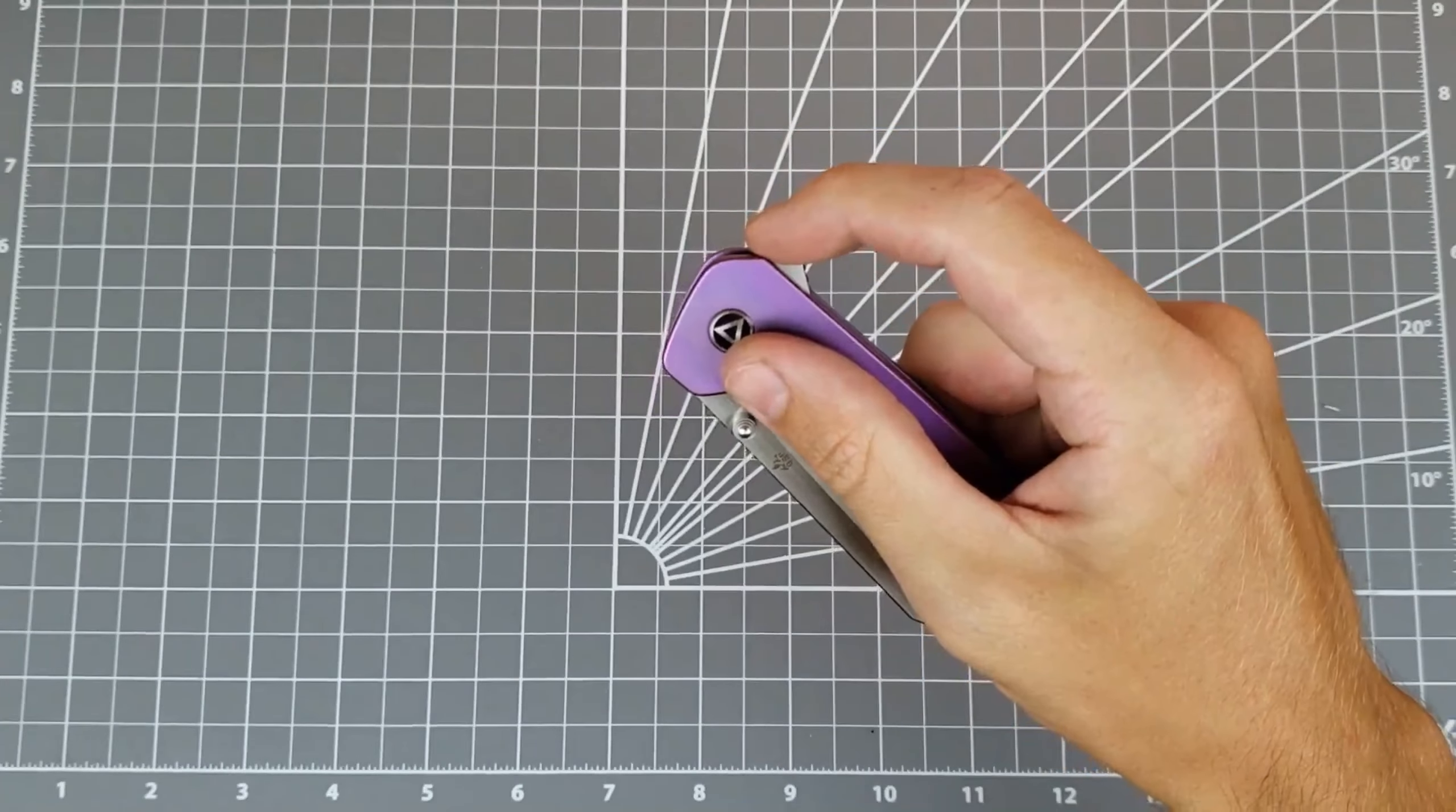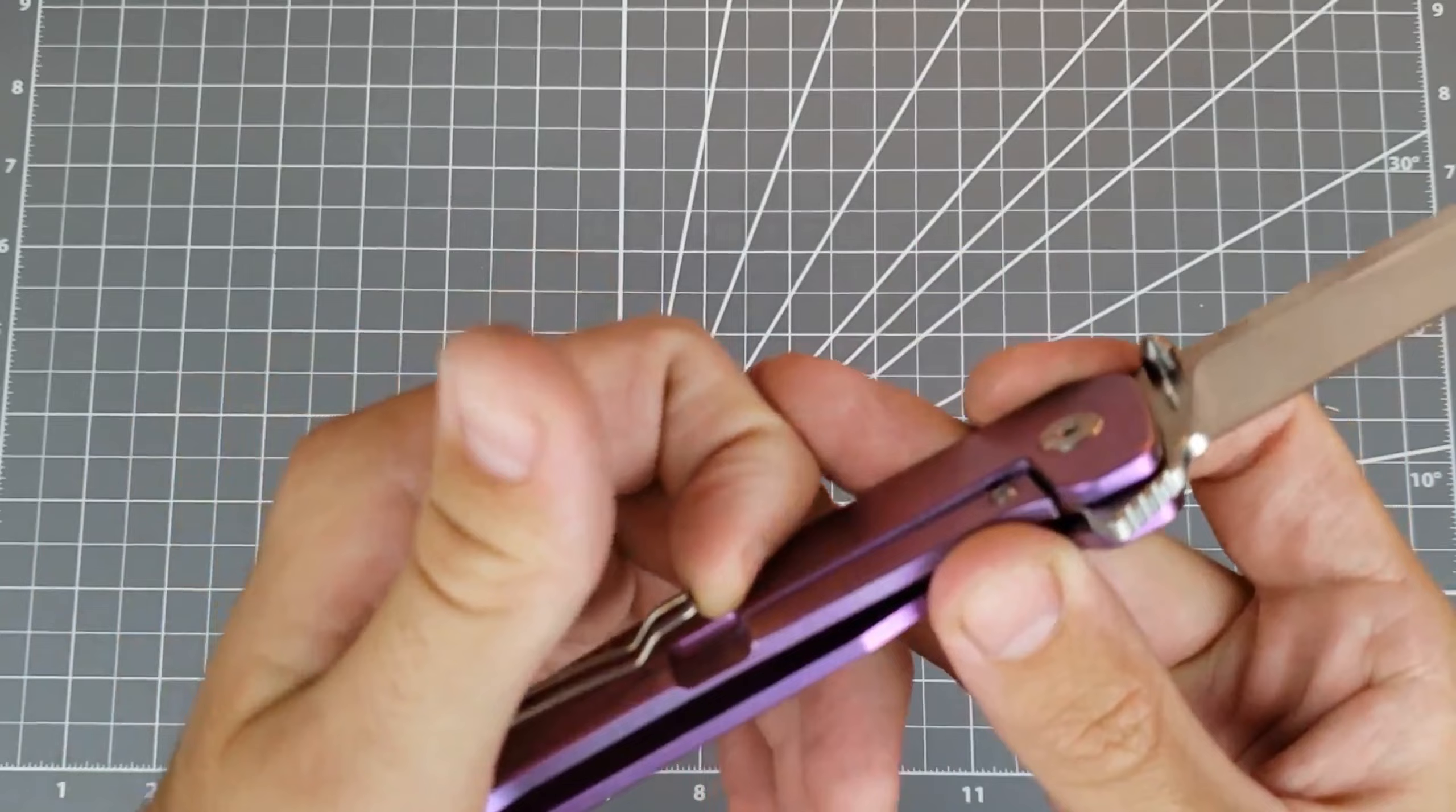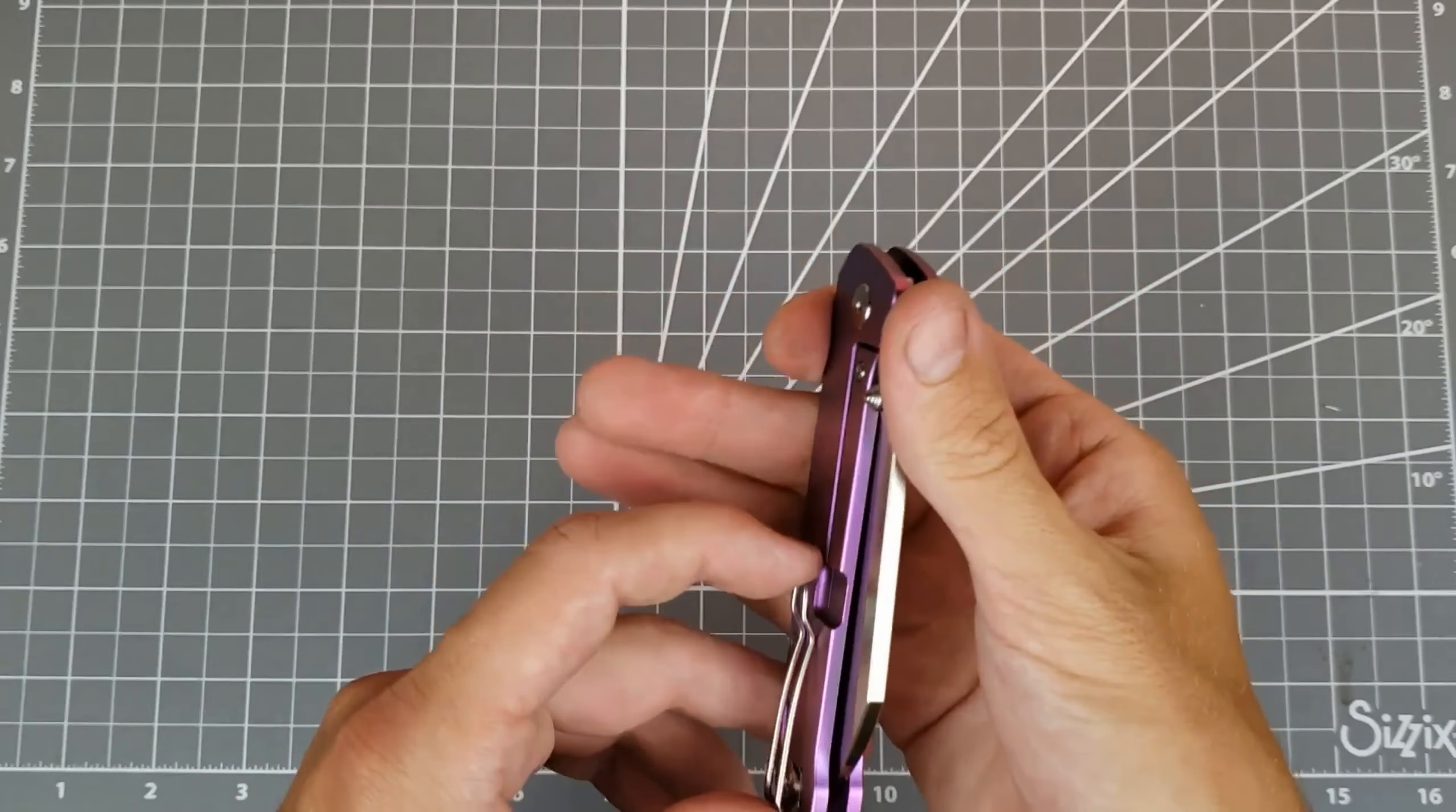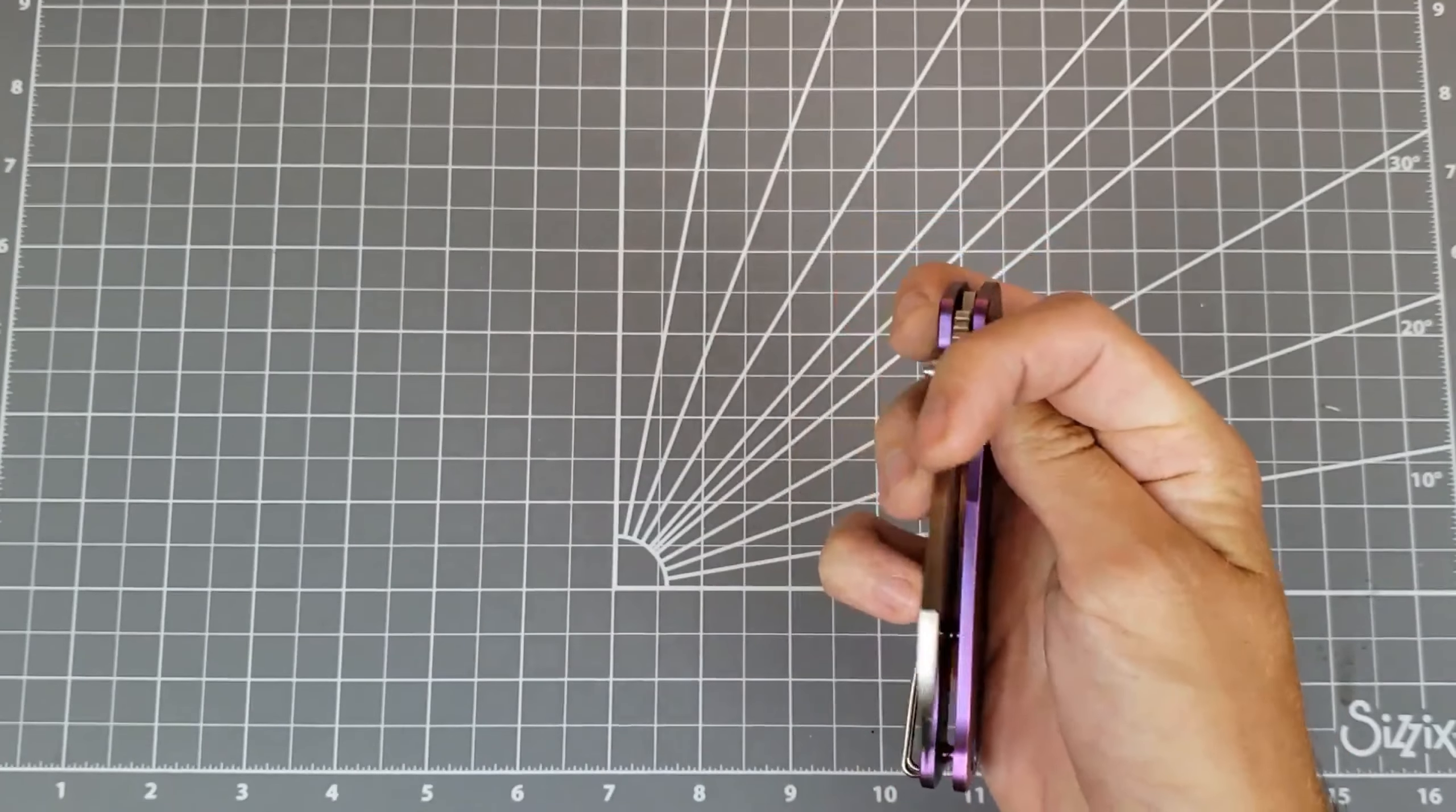First, we have a flipper tab. Try that out. And then we have a wire clip instead of the normal milled titanium clip. I have two titanium frame lock Penguins, and those both have a milled tie clip. Not sure what's on the standard one, but here we have a really nice feeling wire clip. And then also normal thumb studs like on the regular Penguin.